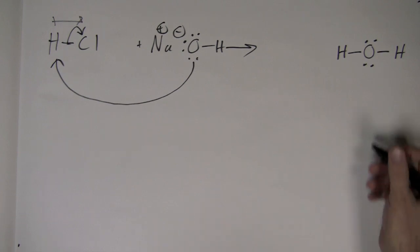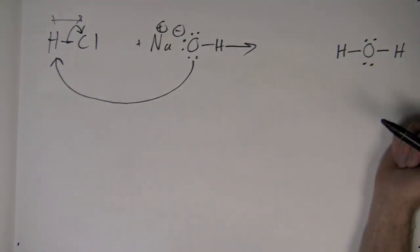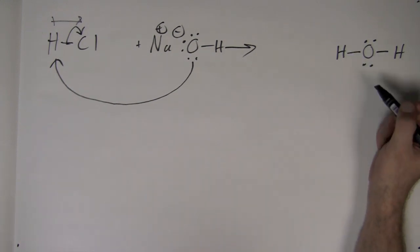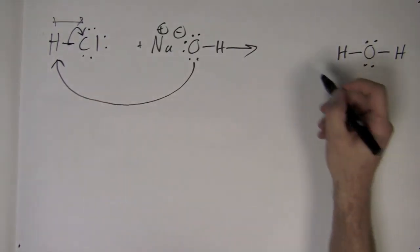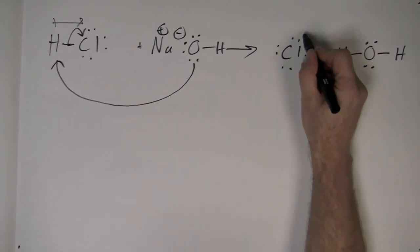Notice the two lone pairs on oxygen are still present. The third lone pair is now existing in the bond between oxygen and hydrogen. Chlorine has now picked up another lone pair and we always show all electrons.